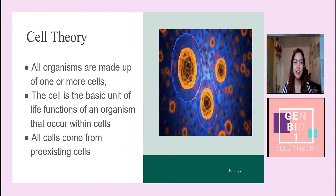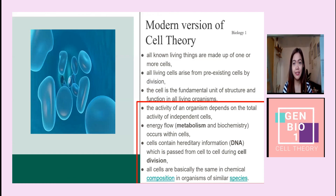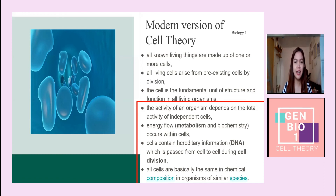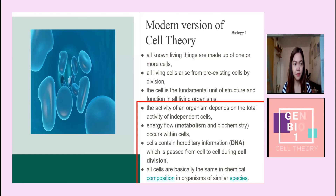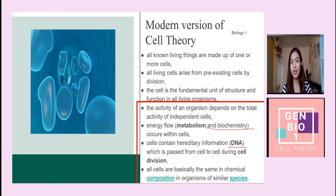So we now have the three postulates of cell theory: first, all organisms are made up of one or more cells; second, the cell is the basic unit of life; and third, all cells come from pre-existing cells. We also have a modern version with four additional points: the activity of an organism depends on the activity of its individual cells; energy flow, metabolism, and biochemistry occur within cells; cells contain hereditary information — DNA — which is passed from cell to cell during cell division; and all cells are basically the same in chemical composition in organisms of similar species.